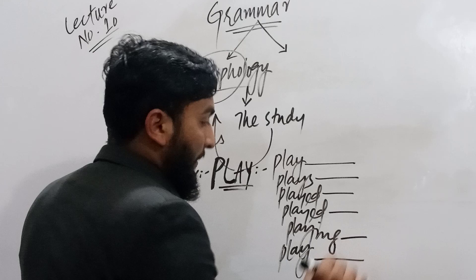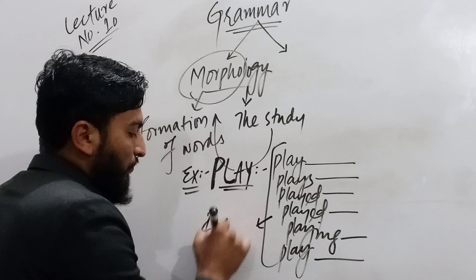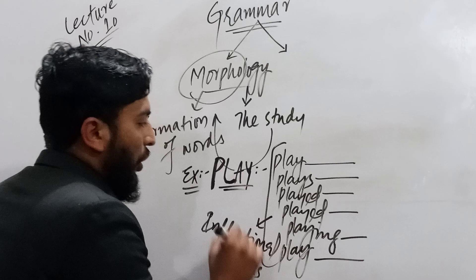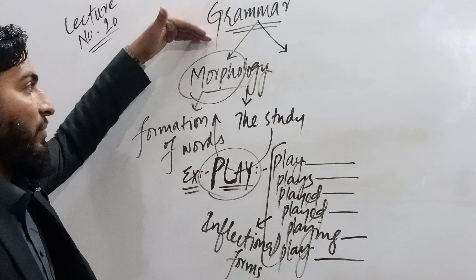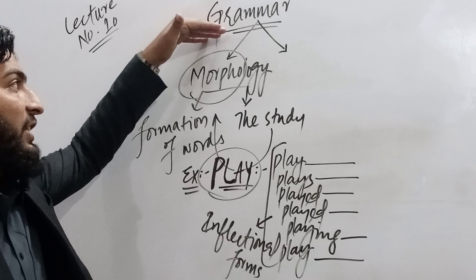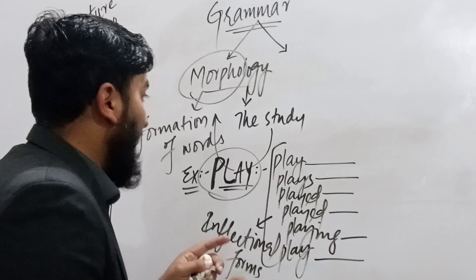We must know that these are six inflectional forms. These words — play, plays, played, playing — are called the inflectional forms of the lexeme 'play.' Grammar is divided into two subcomponents: the first is morphology and the second is syntax.